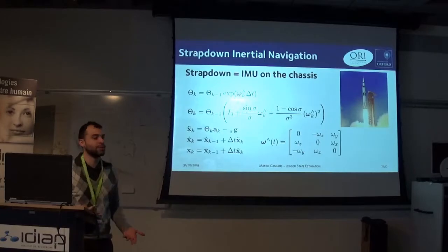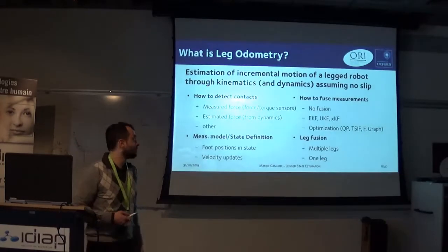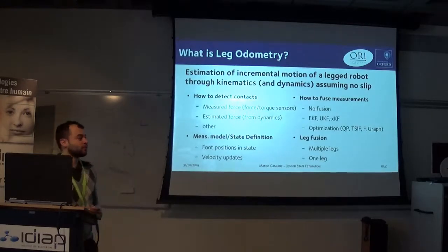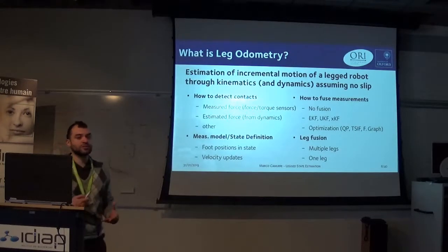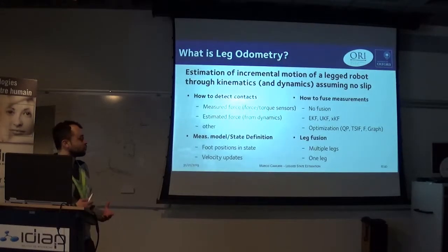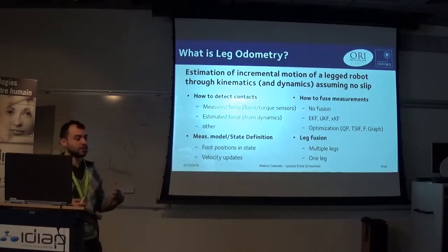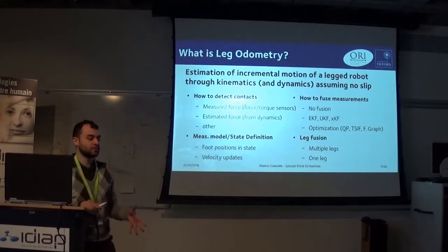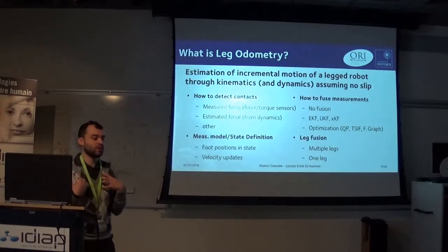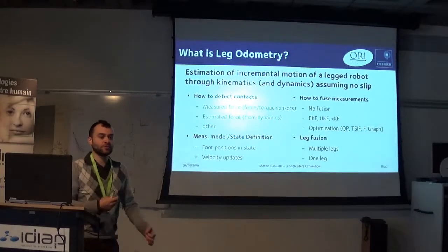But since we speak about legged machines, why not exploit the fact that we have legs? The main ingredient of proprioceptive state estimation of legged robots is leg odometry, which is a concept similar to wheel odometry. The idea is to estimate incremental motion of our robot, assuming that there is at least one leg that is fixed on the ground, and therefore you can intuitively think of your displacement forward as a displacement backwards of your robot.